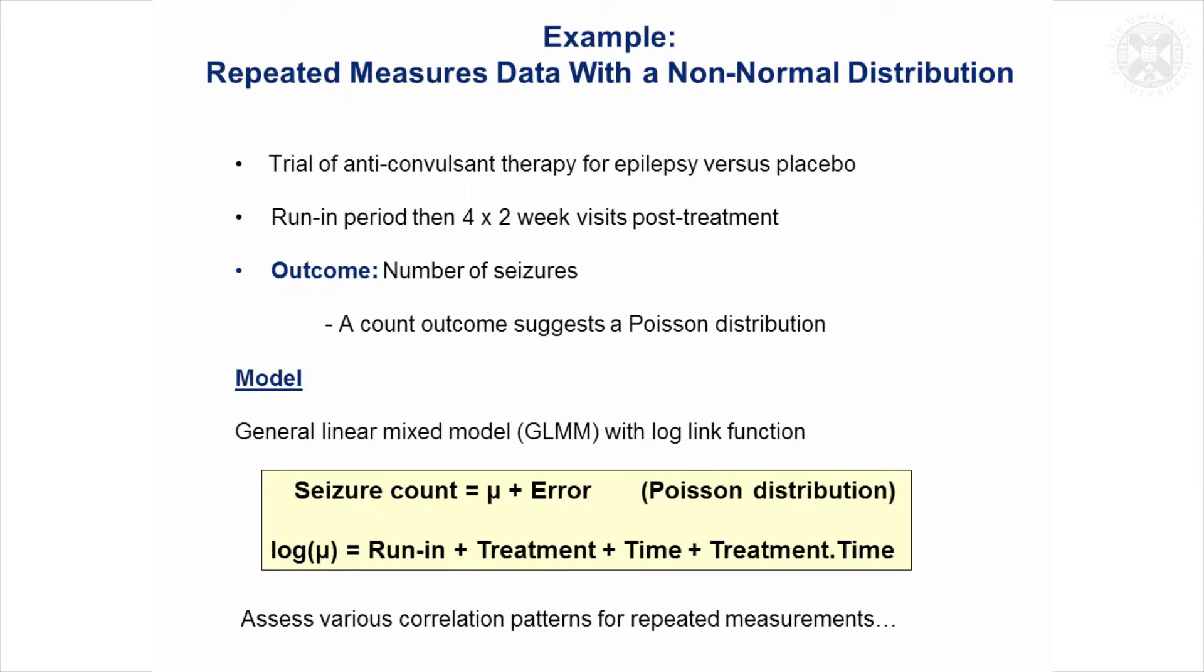I'll briefly look at an example of non-normal data, some repeated measures non-normal data. This is a clinical trial of a therapy for epilepsy. There's an active therapy and it's going to be compared to a placebo where the patients had tablets but they didn't do anything. There was a run-in period where the number of seizures was measured and then fortnightly post-treatment visits. The patients recorded how many seizures they had within each of these two-week periods. So the outcome is a number of seizures. This is obviously a count outcome, so it does suggest that a Poisson distribution might be appropriate.